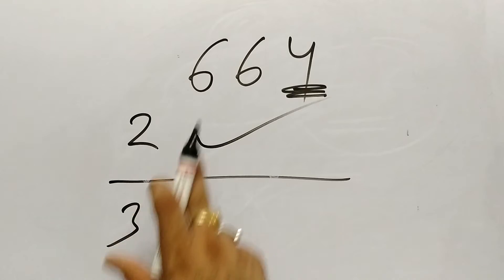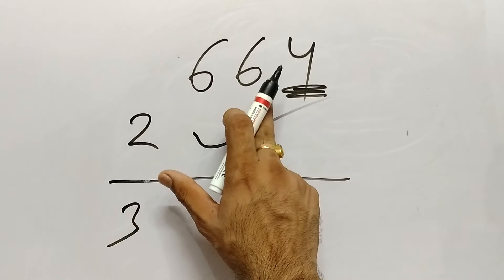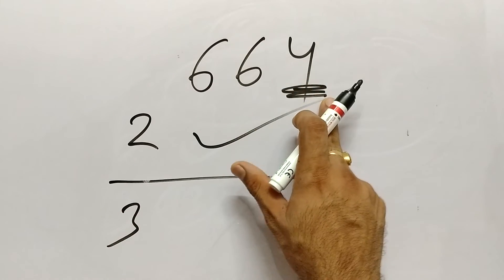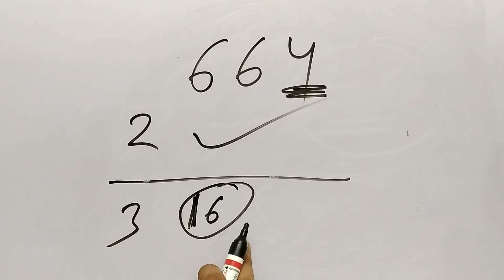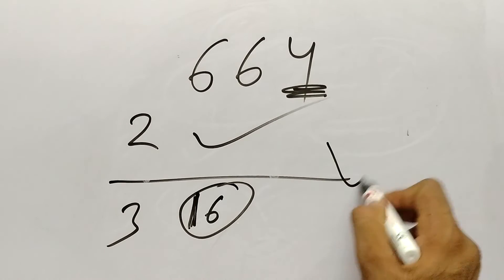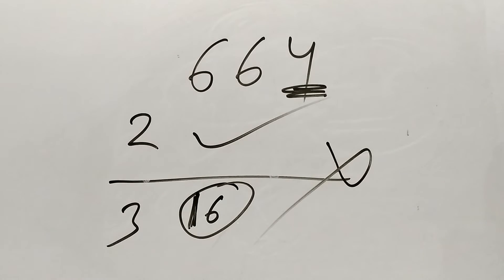3 ke liye what we are going to do? We are going to add the numbers. So 6 plus 6, 12, 12 plus 4, 16. Ab 16, 3 ki table mein aata hai? Nahi aata hai. So what we can say that this number 664 is not divisible by 6. Okay let's take last number.